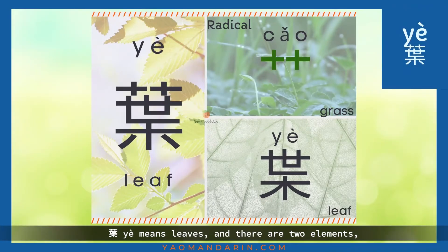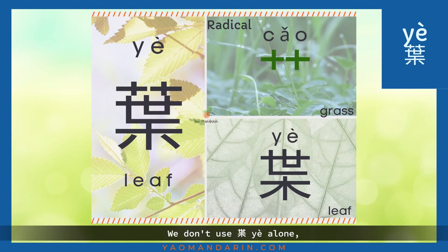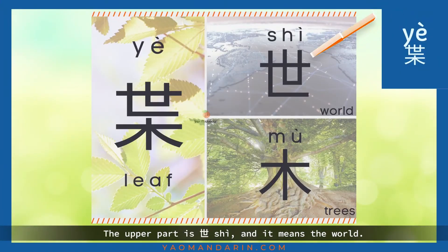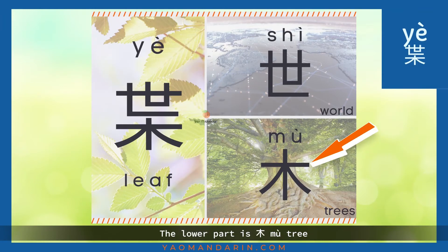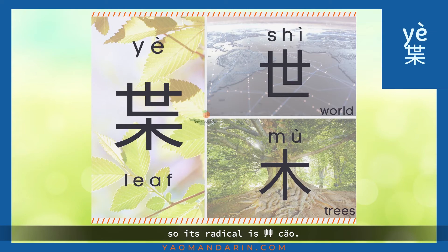葉 means leaves and there are two elements: the upper part 草, meaning grass, and the lower part. We don't use 草 alone, but we can learn two Chinese characters from 葉. The upper part is 世 and it means the world. The lower part is 木, trees. So you may remember 葉 relates to 木. We have trees around the world and 葉 is as green as grass, so its radical is 草.